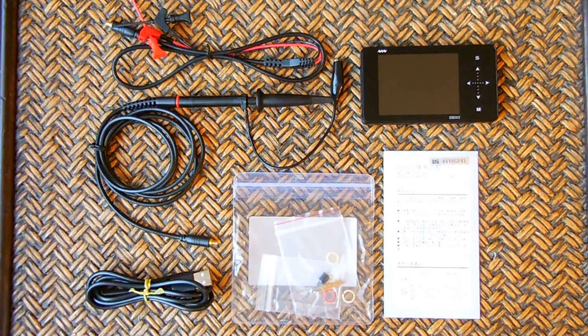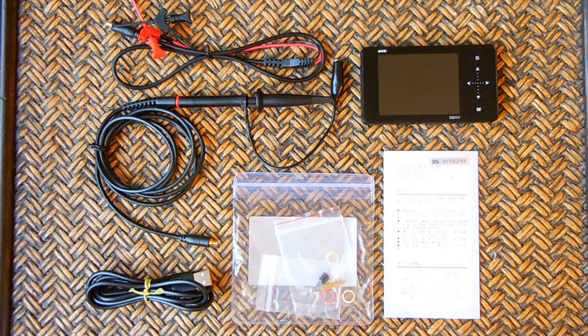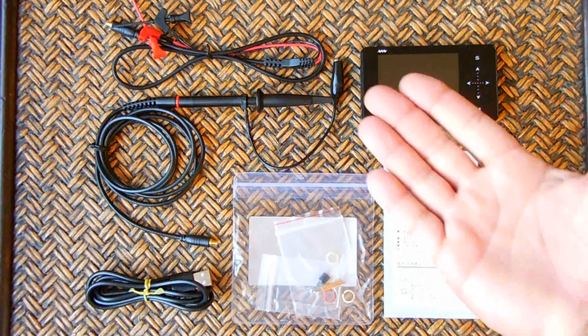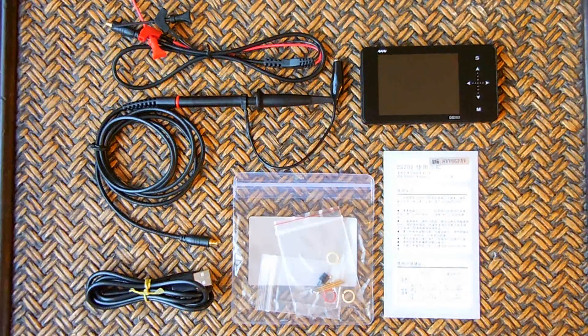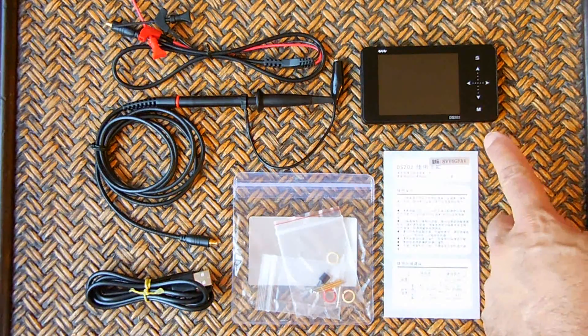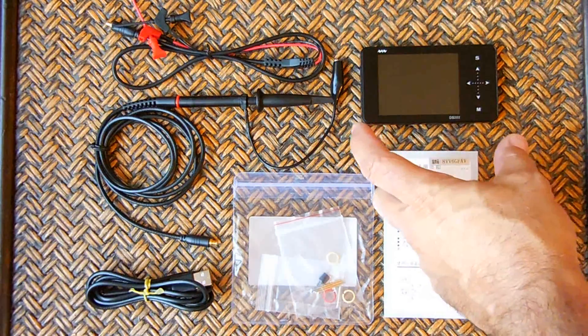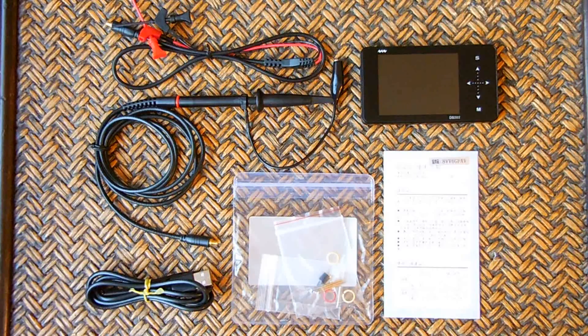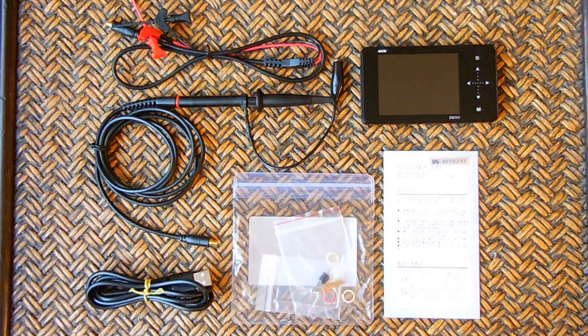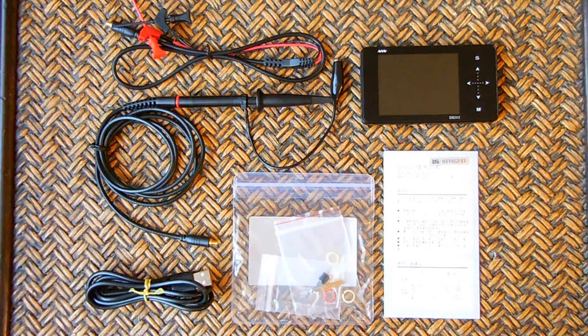This is what you get inside the box when you receive it. You get the oscilloscope, which is extremely small. Look at it in relation to my hand. It can fit in your shirt pocket, and it only measures about three-eighths of an inch or 10 millimeters in thickness, four inches long or 100 millimeters, and two and a quarter inches wide or 55 millimeters. So it is super compact.